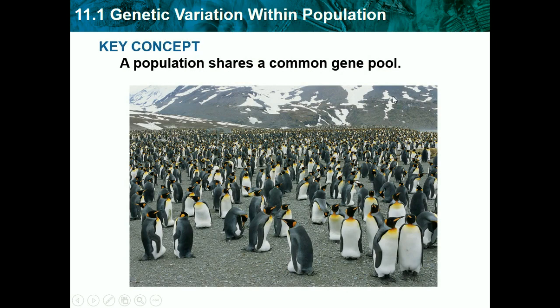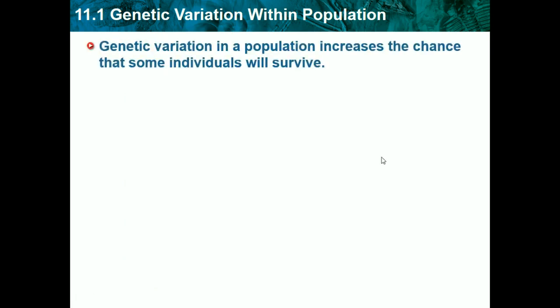A population shares a common gene pool. A gene pool is all the genes that a certain species or population can acquire. Genetic variation in a population increases the chance that some individuals will survive. The more diverse individuals are, the more likely some are to survive than others.